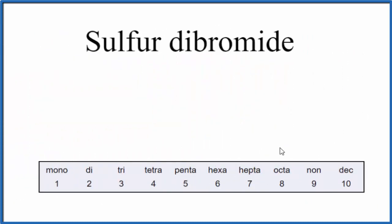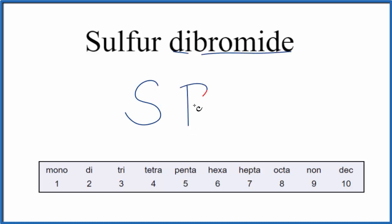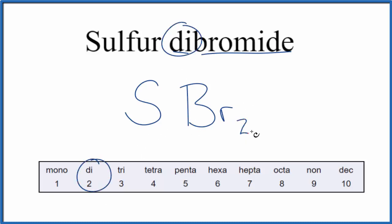But we do need to consider these prefixes when we write the formula for sulfur dibromide. We'll first write S for sulfur, and then we have dibromide — Br for the bromine atom, and di means 2 — so it'll be SBr₂, and that's the formula for sulfur dibromide.